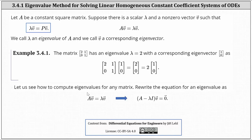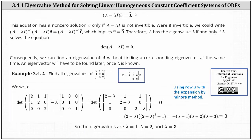Now let's see how we determine eigenvalues for any square matrix. We begin with the equation matrix A times vector v equals lambda times vector v and write it in the form where the difference of A and lambda I times vector v equals the zero vector. This equation has a nonzero solution vector v only if the difference of A and lambda I is not invertible. If it were invertible, we could multiply both sides by the inverse, which would imply vector v equals the zero vector. Therefore, matrix A has eigenvalue lambda if and only if lambda solves the equation: the determinant of (A minus lambda I) equals zero.